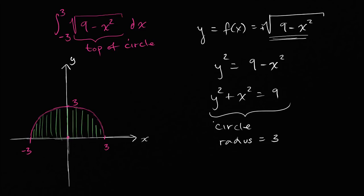The area of the entire circle, if there were an entire circle, it would just be pi r squared. So it would be pi times 3 squared, which is equal to 9 pi. Now this is only half of the entire circle, so we're going to divide that by 2. So the area is 9 pi over 2.